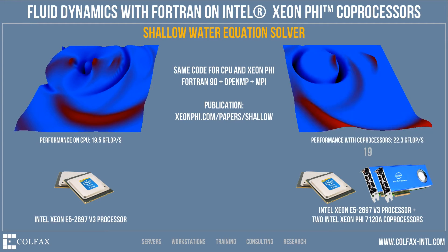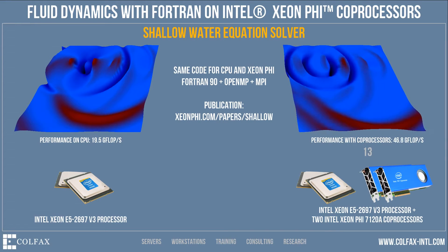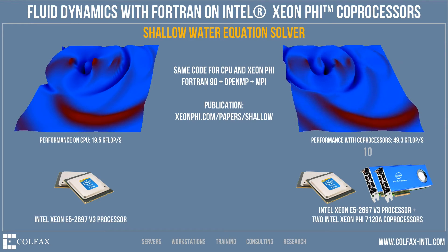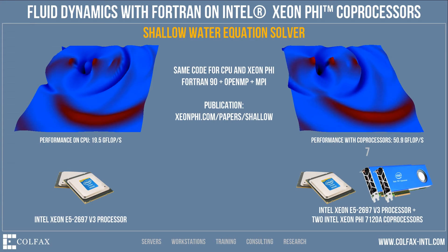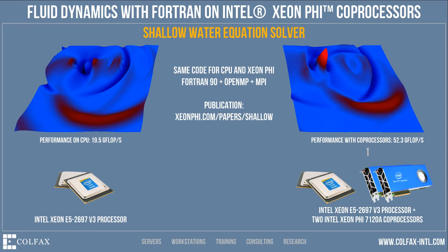Now we will add to the system two Intel Xeon Phi coprocessors. Each coprocessor has 61 active cores and features the Intel Mini integrated core architecture. With the addition of coprocessors, the application achieves over 50 gigaflops per second. This is acceleration by a factor of 2.7.